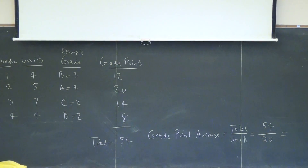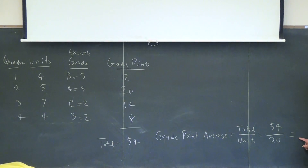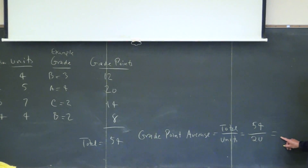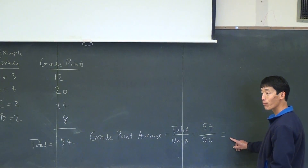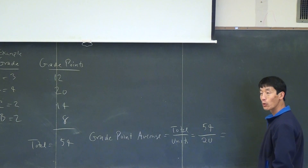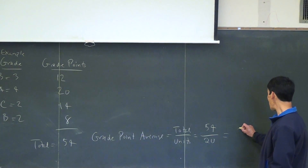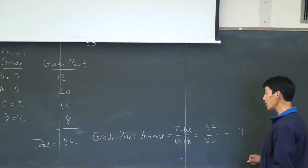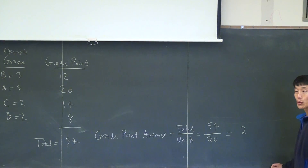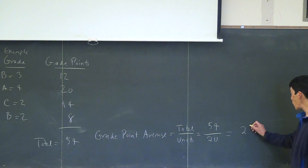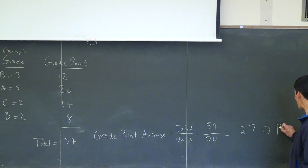For example, if the grade works out to 2 and 14 over 20, which simplifies to 2 and 7 over 10, that's 2.7.